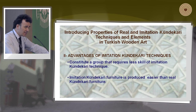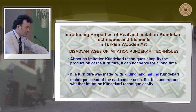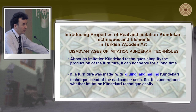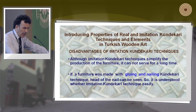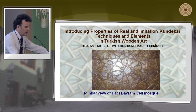The advantages of imitation Kundakari technique: it constitutes a group that requires less skill. Imitation Kundakari furniture is produced more easily than real Kundakari technique. Although imitation Kundakari techniques simplify the production of furniture, it cannot serve for a long time. If a furniture piece was made with gluing and nailing Kundakari technique, the heads of the nails can be seen, so it is easy to identify whether imitation Kundakari technique was used. This is an example.